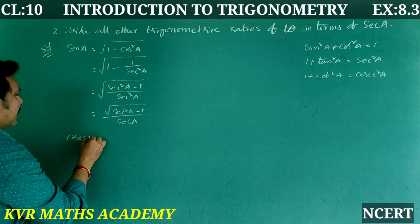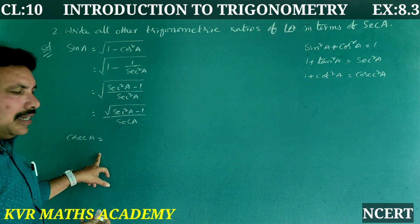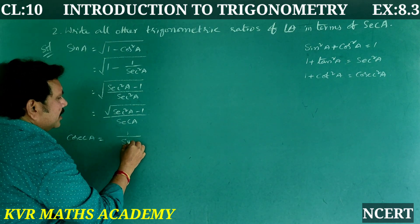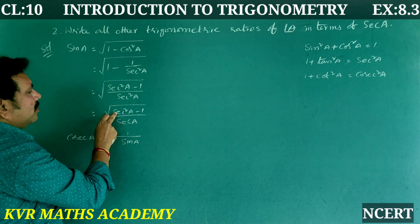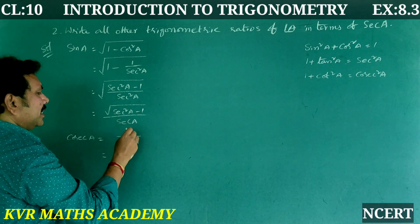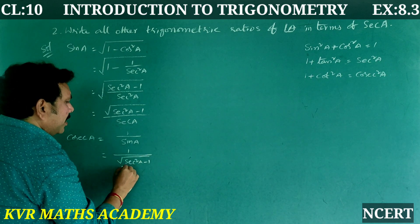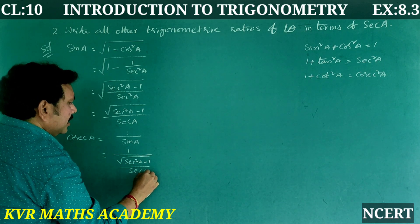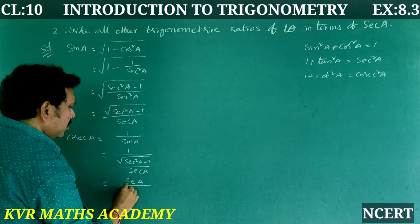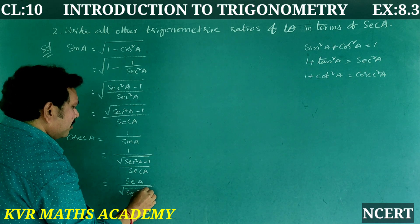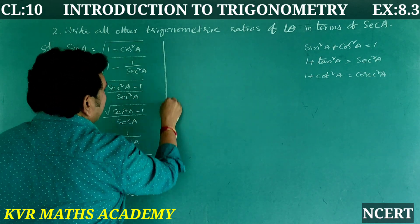Now cosec A = 1/sin A. Substituting sin A = √(sec²A − 1)/sec A, we get cosec A = sec A / √(sec²A − 1). So cosec A in terms of sec A is sec A / √(sec²A − 1).